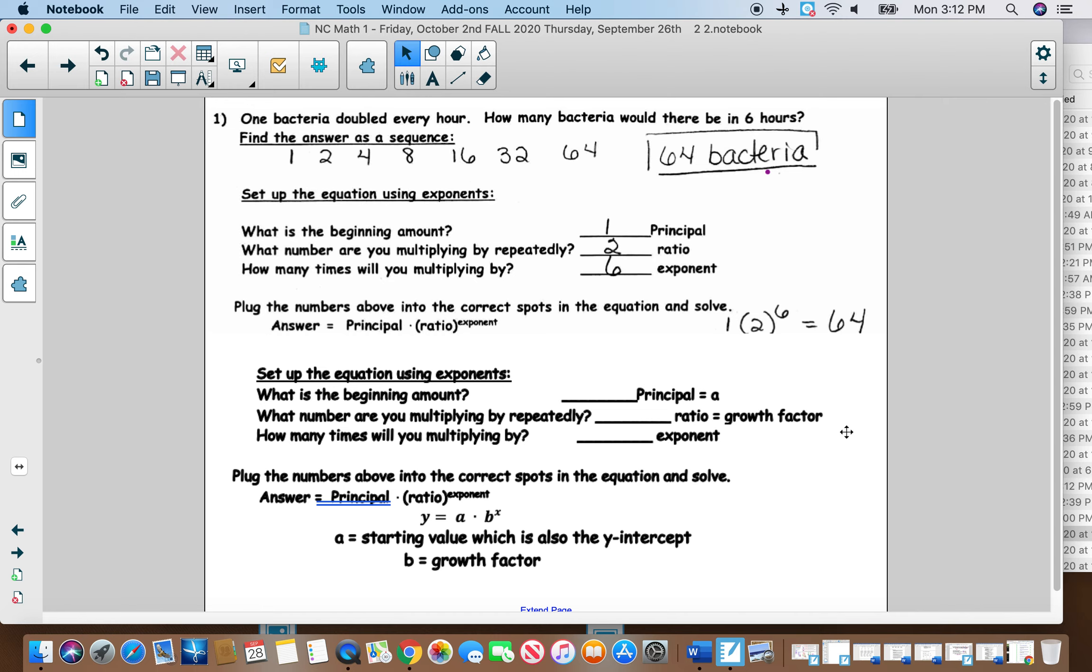So basically, the numbers that you were putting here, the principle is the beginning, which is still the same. The ratio is 2, and the exponent is 6. So the equation is going to still look like this, but your numbers are going to change just a little bit.